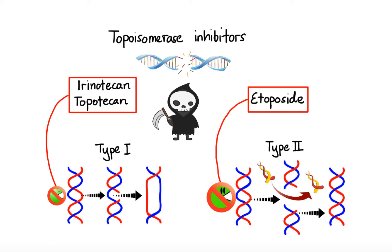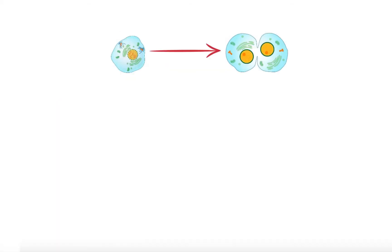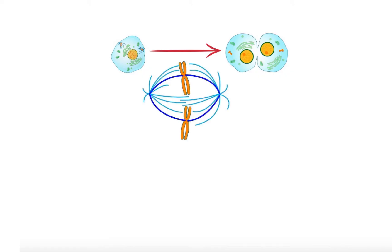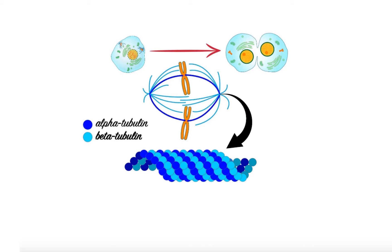What about cancer cells that make it to the M phase of the cell cycle? During the mitosis phase, two sets of fully formed chromosomes need to be separated to produce two daughter cells. For that to happen, microtubules must first be assembled and stabilized in the correct position. Each microtubule is constructed from alternating alpha-tubulin and beta-tubulin molecules to form a stiff, hollow cylindrical structure. As the microtubules lengthen and shorten by addition and loss of tubulin subunits at their ends, they push and pull chromosomes apart to opposite ends of the cell.